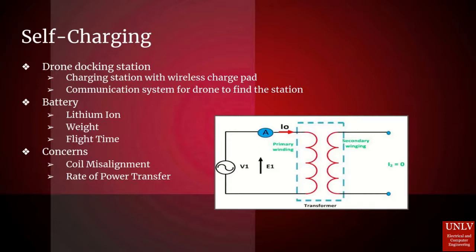Perhaps the most courageous endeavor of UAASV, the autonomous charging feature adds a layer of complexity to the design process. Plans for implementation explore the use of lithium-ion batteries, efficient path planning, and careful maintenance of optimal weight. However, concerns of coil misalignment and rate of power transfer may hinder the implementation of this feature.